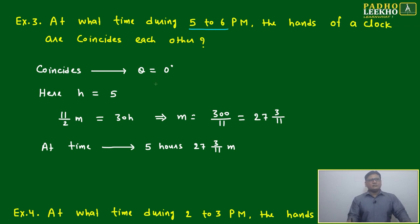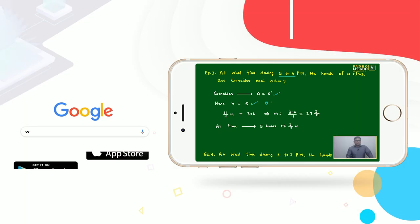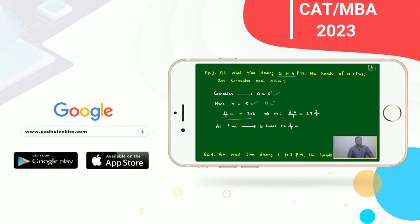For zero degrees, we use the formula: 5 theta equals 0, then 11 by 2 m equals 30h. What we have to find is m. We already have h equal to 5, so 11/2 m equals 30 times 5, which gives us 21 and 9/11 minutes.